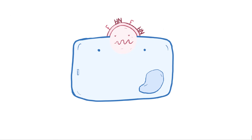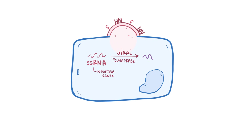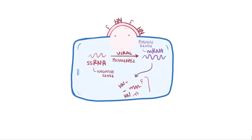Once mumps enters a cell, the single-stranded RNA, which is negative sense, gets transcribed by the viral polymerase enzyme into a complementary positive sense strand of mRNA, which can then be translated by the host cell ribosomes into new copies of the envelope proteins and the viral polymerase, which get assembled into new viruses.